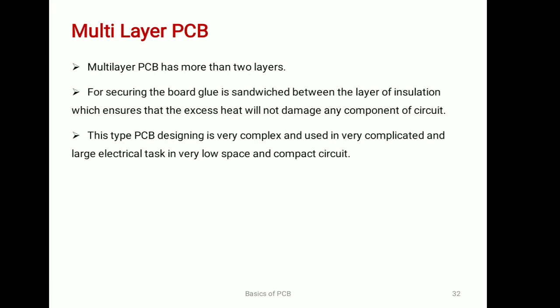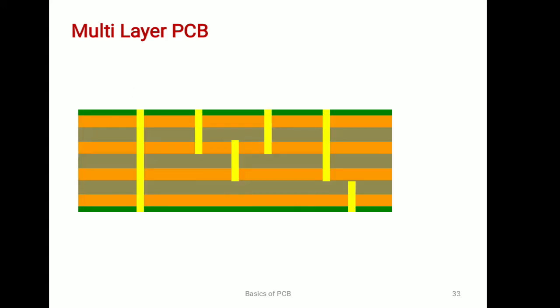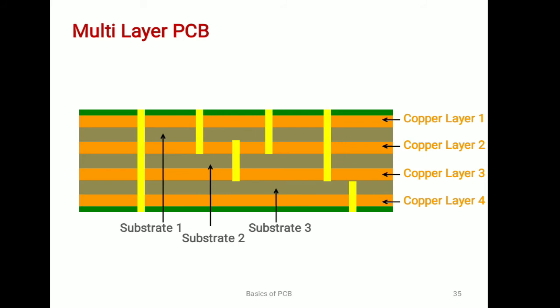Next is multi layer PCB. This PCB has more than two layers of conducting material — that means it has at least three conducting layers of copper. This PCB design is very complex and used in very complicated and large circuits with very low space and compact circuitry. This is a multi layer PCB with four copper layers and three substrates sandwiched between them. VIAs are used to provide connections between layers, and solder mask is provided on the top and bottom layers.